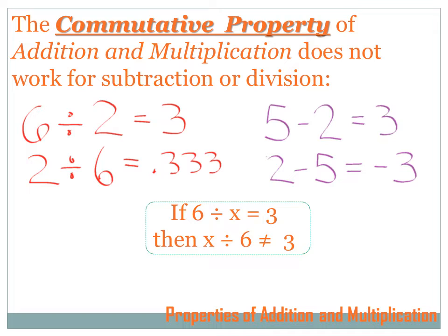Now, to throw in a little bit of algebra: if 6 divided by x equals 3, then x divided by 6 does not equal 3. That symbol — the equal sign with a line slashing through it — means 'does not equal.'